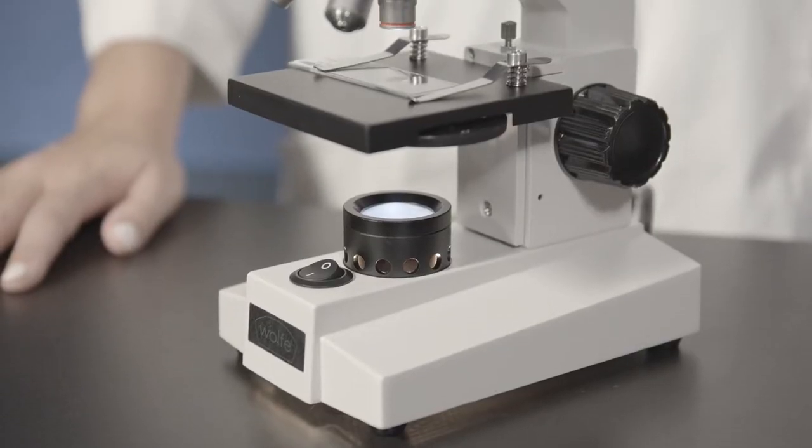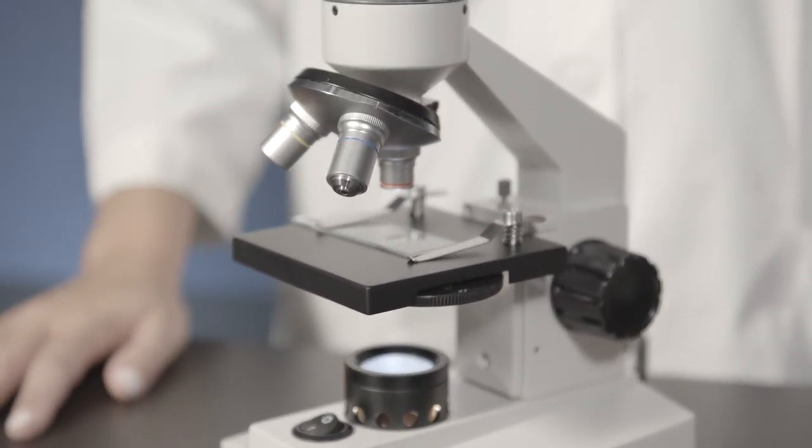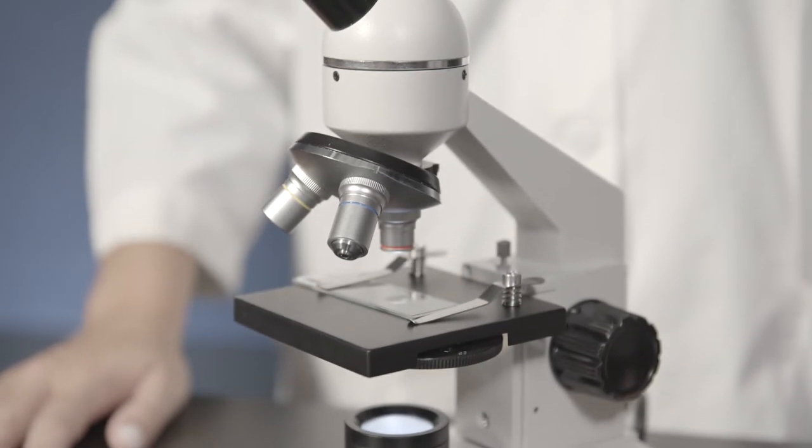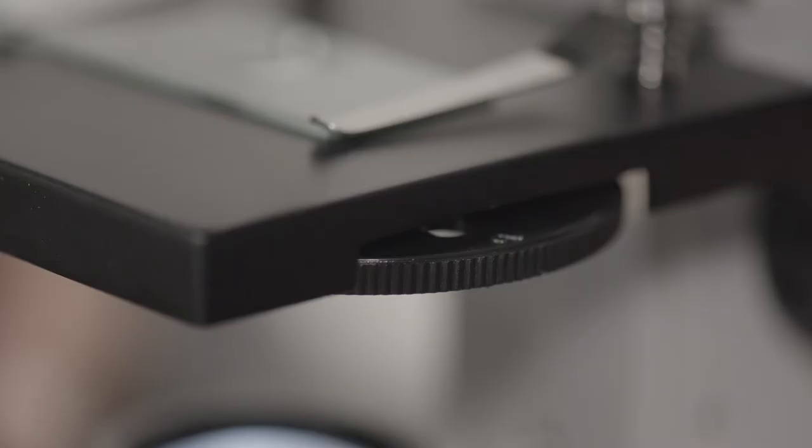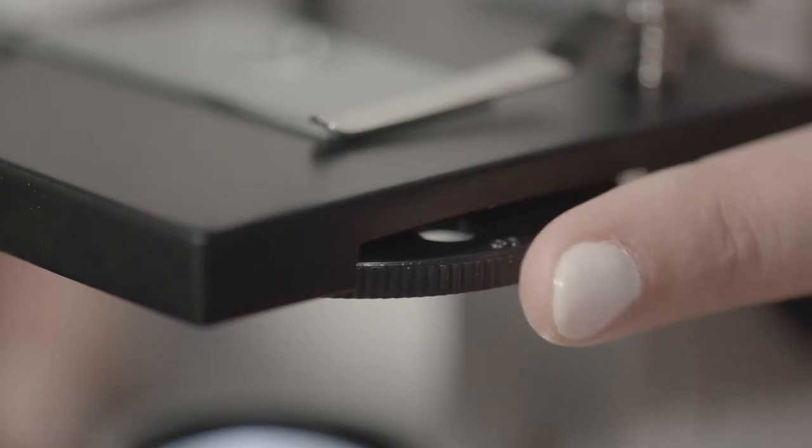Microscopes for introductory-level students usually control the amount of light entering the objective by using a 5-hole-disc diaphragm. Rotate the diaphragm while viewing the specimen to achieve the proper light level and image contrast.